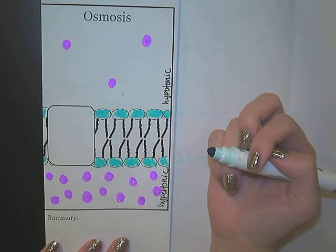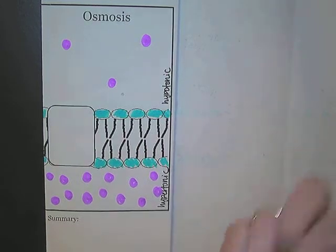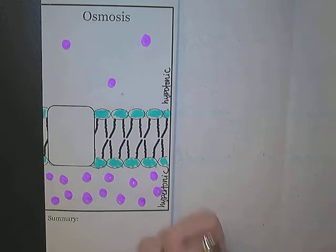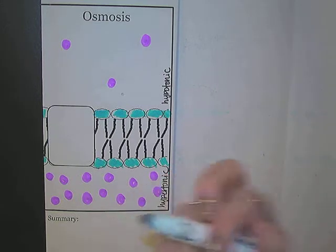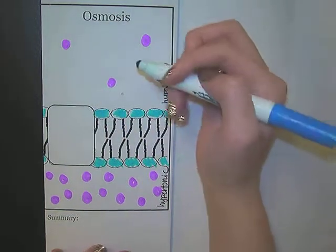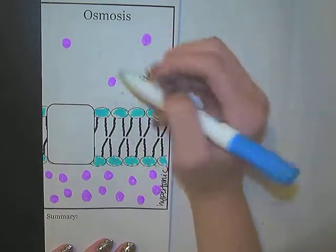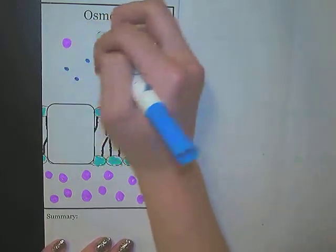The water is going to be moving in the direction of its own concentration gradient. In this scenario, wherever there's not very much solute, there's going to be a lot of water.